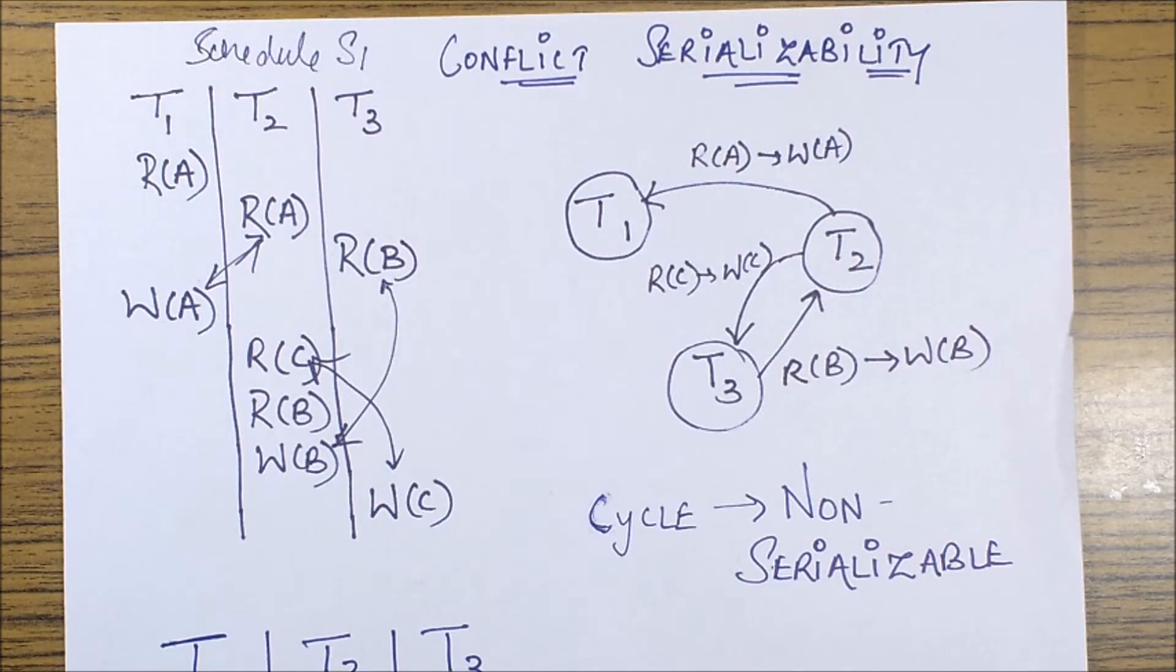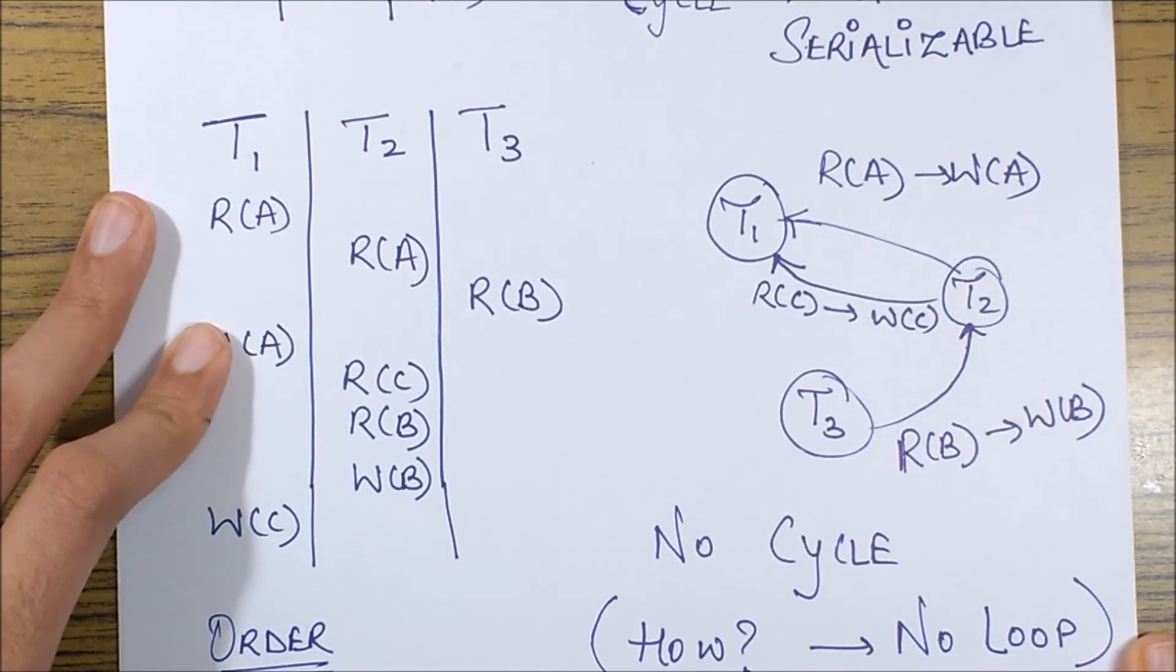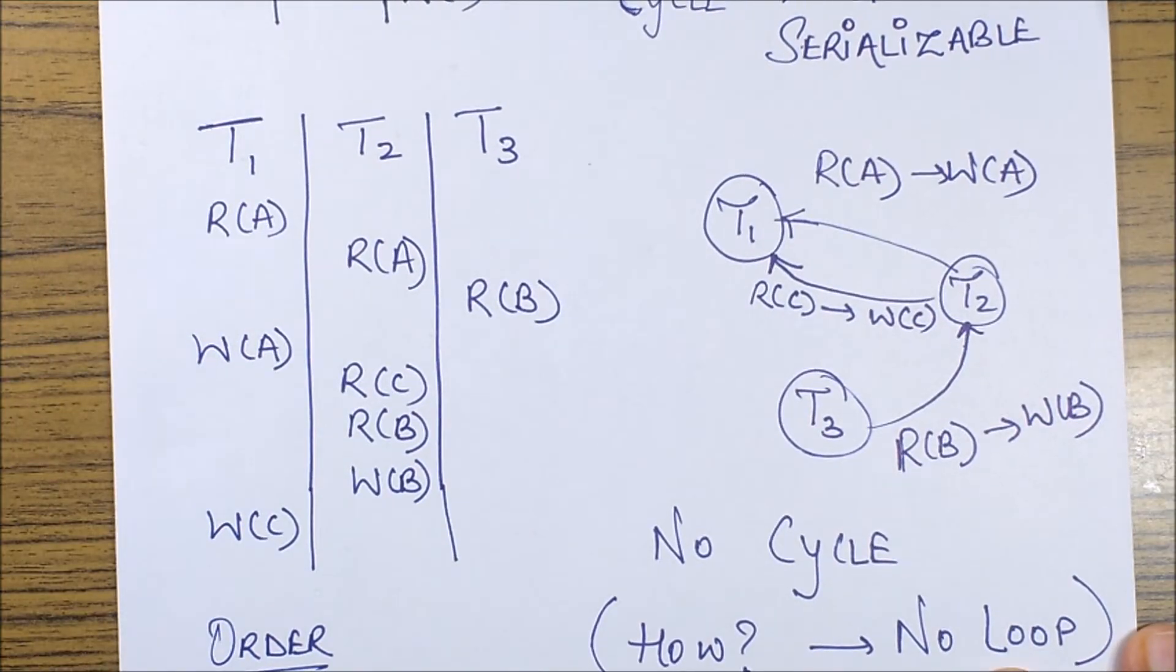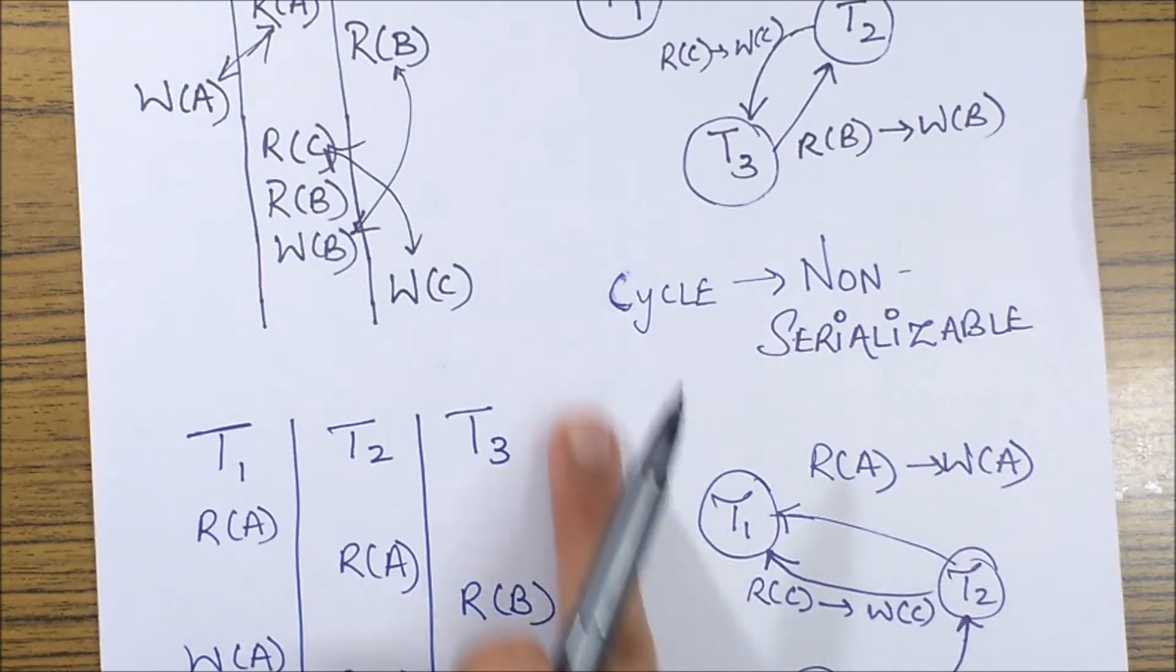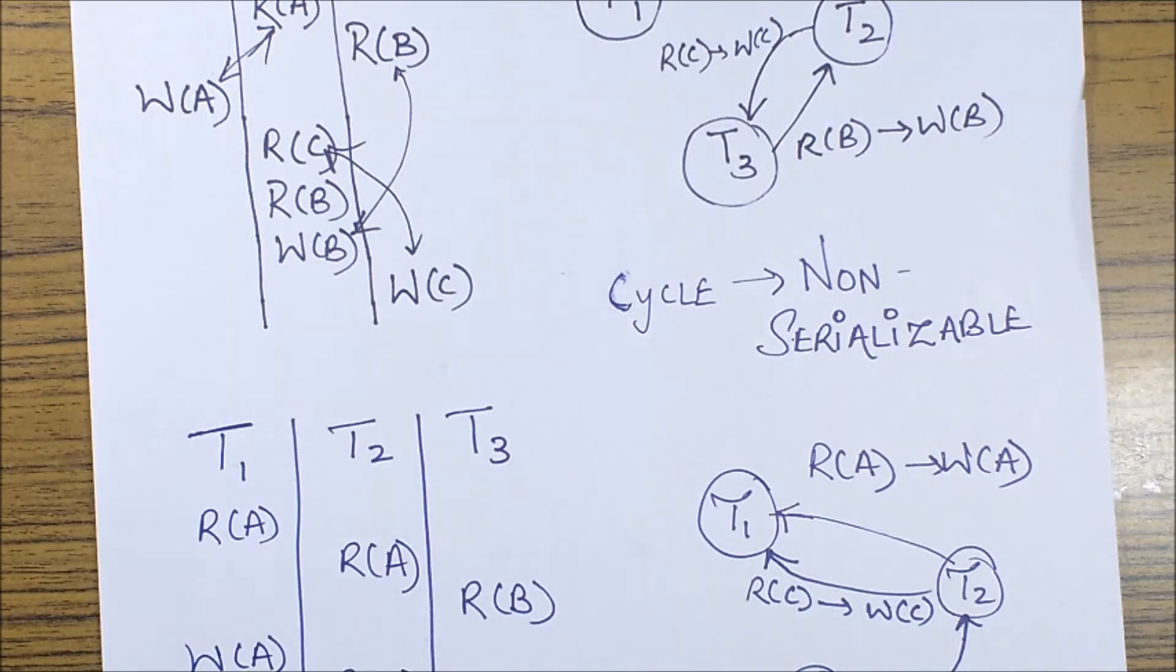So let's start with the next example for the same concept of conflict serializability. Let's say this time I have this question. So what I've done is I just moved this WC from this transaction T3 to over here in T1.